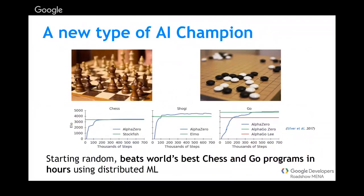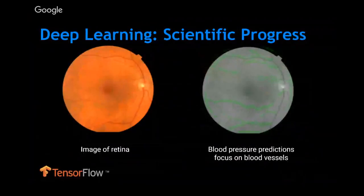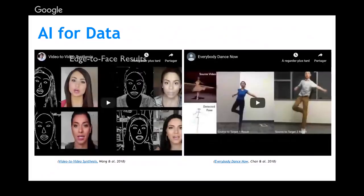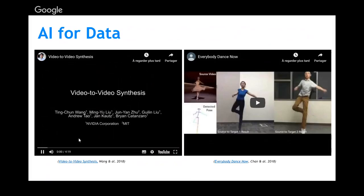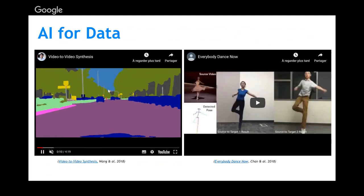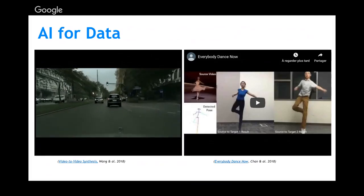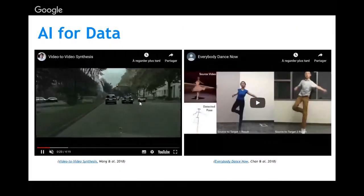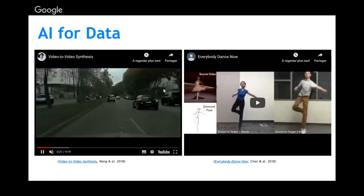In reinforcement learning we have AlphaGo, currently the best algorithm in deep reinforcement learning. In supervised learning, for example in computer vision, we can predict things from retina images that doctors can predict from imaging. Another application is Generative Adversarial Networks — we train them on many images and they generate new data not seen before. We also see deep learning applied to object tracking, for example in a smart shop where the program identifies products taken by customers and tracks them.